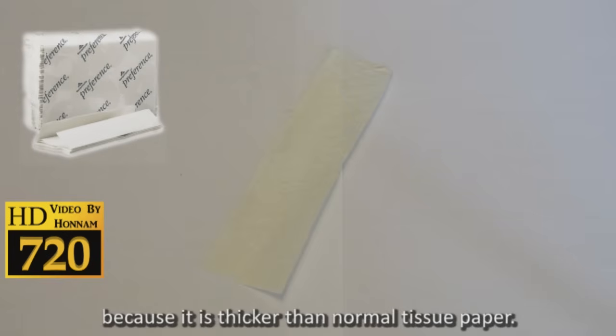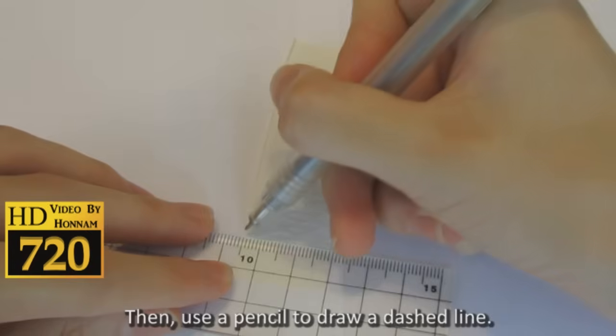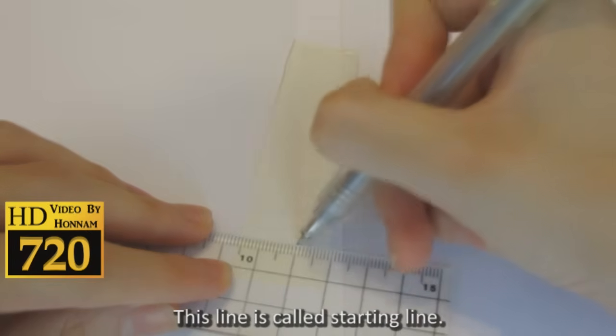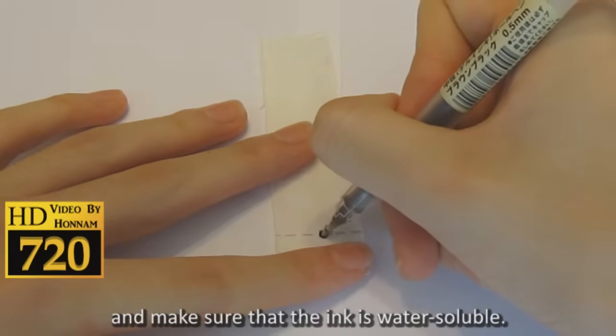Then use a pencil to draw a dash line. This line is called the starting line. Draw a dot with your pen on the starting line and make sure that the ink is water soluble.